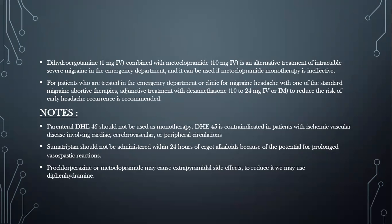There are certain precautions to keep in mind and to inform the patient about. Parenteral dihydroergotamine should not be used as monotherapy as it is contraindicated in patients with vascular disease or peripheral circulation issues. Sumatriptan should be administered at least 24 hours after ergot alkaloids due to the potential for prolonged vasospastic reaction. Also, antiemetic drugs prochlorperazine or metoclopramide may cause extrapyramidal side effects, so diphenhydramine may be used to reduce these.